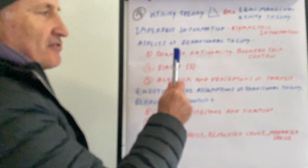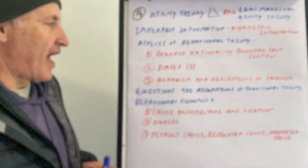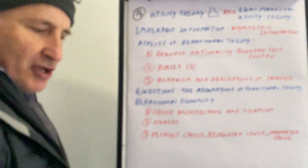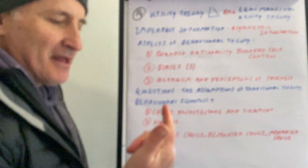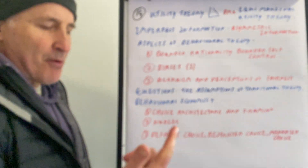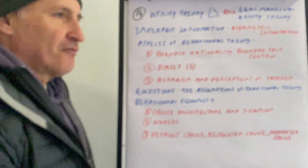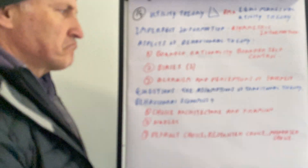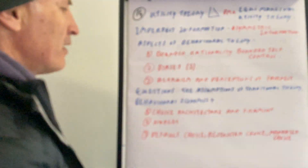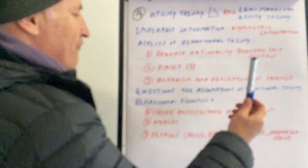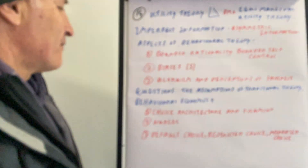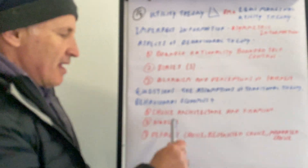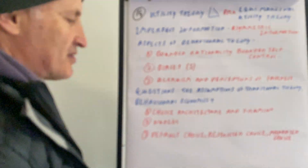Bounded rationality — you all know what that means. Biases: let's go through four of them — anchoring, availability bias, rule of thumb bias, default bias, and social fairness bias. That's the fifth one. And then altruism and perceptions of fairness.